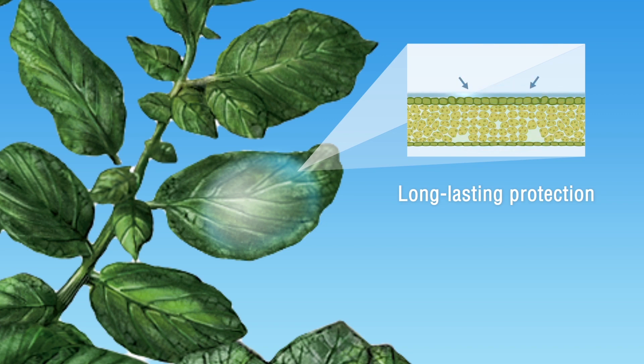At the same time, propalmo carb, the other reliable active ingredient in Infinito, stays on the leaf to provide further protection from new spores attacking the plant. This protection is enhanced through the presence of fluopicolite on the leaf.